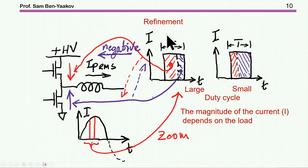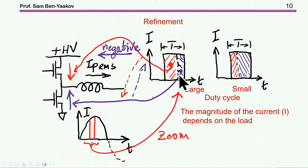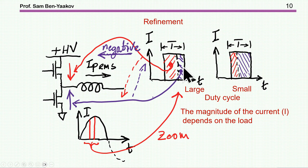There is a refinement to this conduction loss estimation. Here I'm showing a case with a current coming out at a certain duty cycle, pointing out that the distribution of conduction loss between the upper and lower transistors at any given point — not on average — depends on the duty cycle. For example, with a high duty cycle, the upper transistor is conducting most of the time, while the lower transistor conducts for a shorter time.